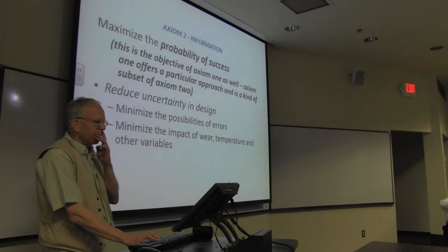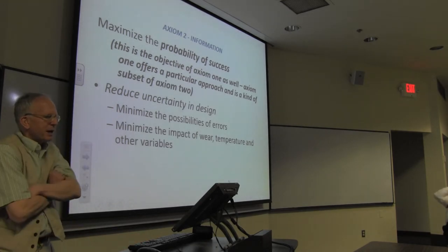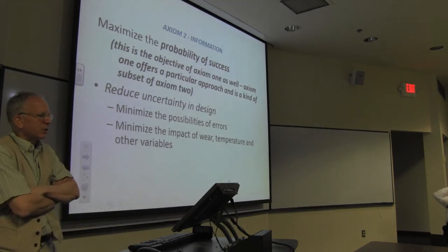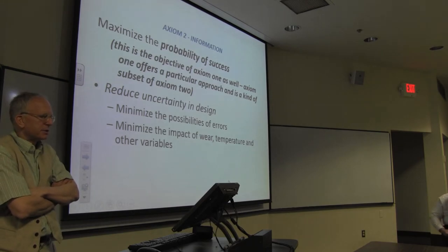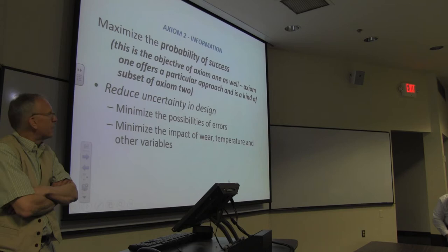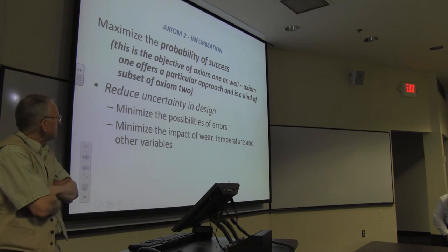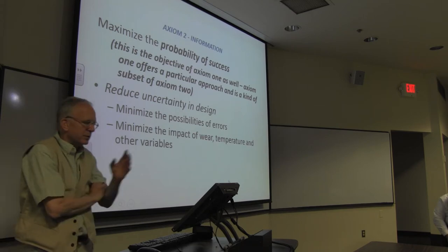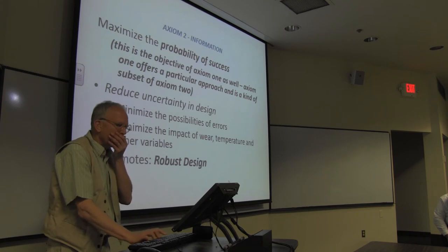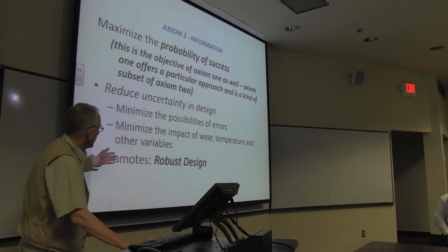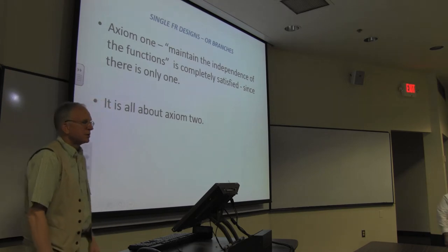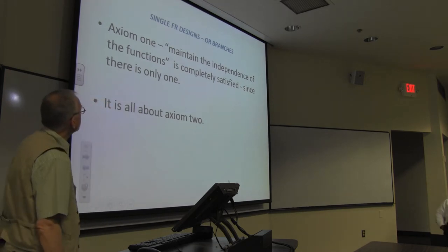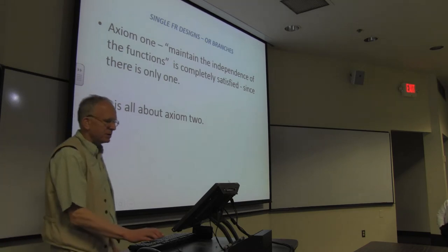Axiom two: least information. What we want to do is maximize the probability of success, and this is equivalent to minimizing the information content. We're going to reduce the uncertainty, minimize the possibility of errors, maximize and minimize the effect of wear, temperature, other hurdles. Lots of people know this is sort of robust design.